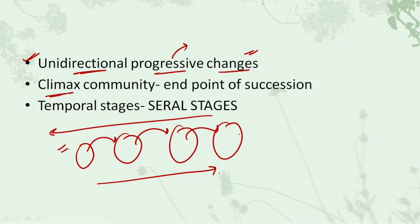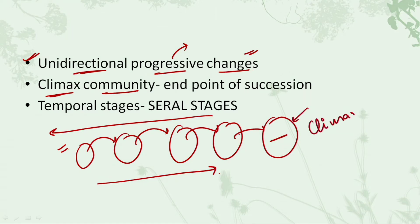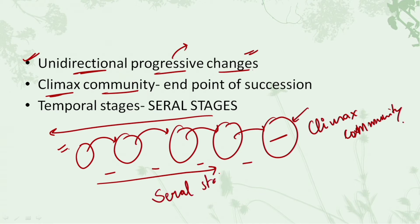Now, what is a climax community? The final community that forms — the last community that survives in that area — is known as the climax community. And the many temporary stages that occur in between are given the name seral stages. These two terms are very, very important. Questions have been asked from them, and they hold utmost importance in this topic. Make sure you remember what seral stages are and what we mean by climax community.